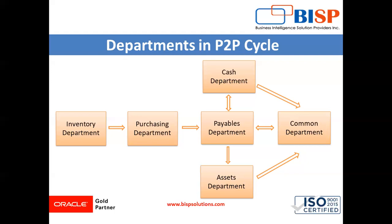The next step is supplier selection. The company prepares a list of suppliers who can provide the materials and goods to the organization on time. The purchasing department asks each supplier to submit a quotation which includes the price, terms of delivery, quality of goods, and any other information needed for making a decision. This step also involves negotiation — we can negotiate with the supplier for the best deal.